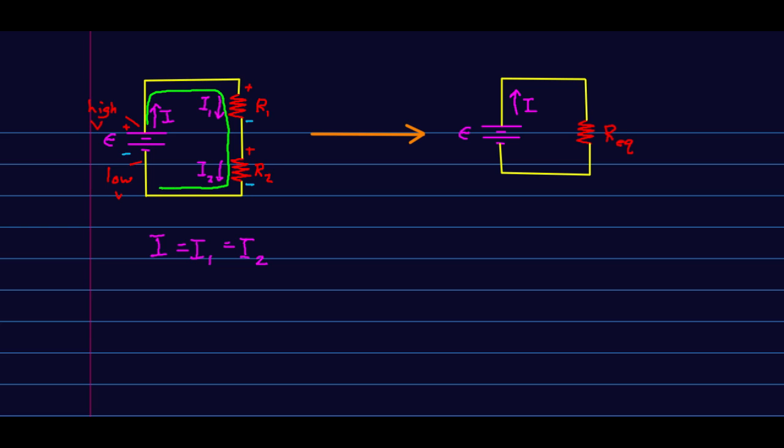Now do not confuse this loop with the current direction. This is the direction I am imagining that I'm walking around the circuit, and it doesn't have to match the direction the current is going, although in this case it does.